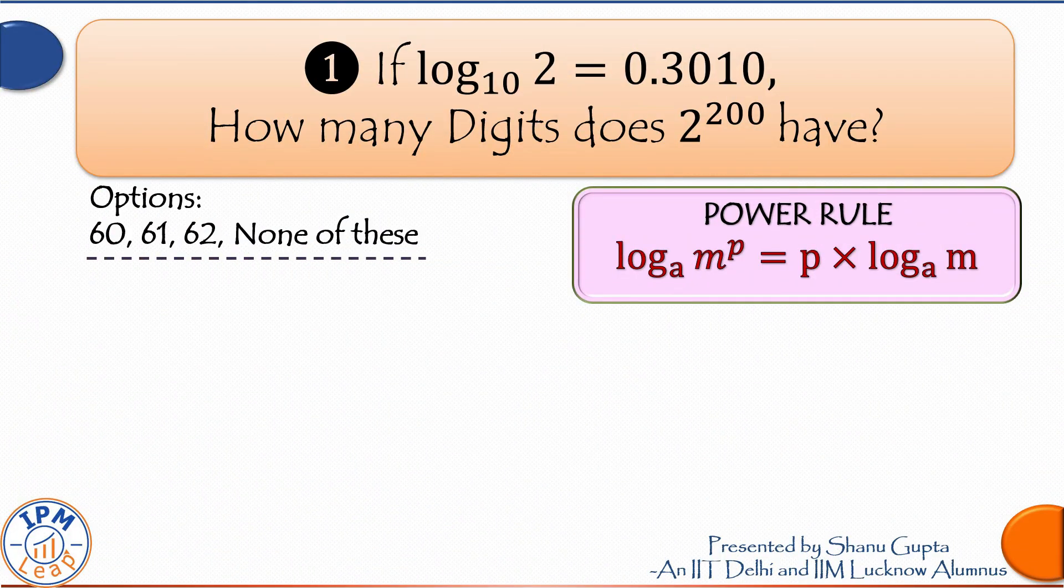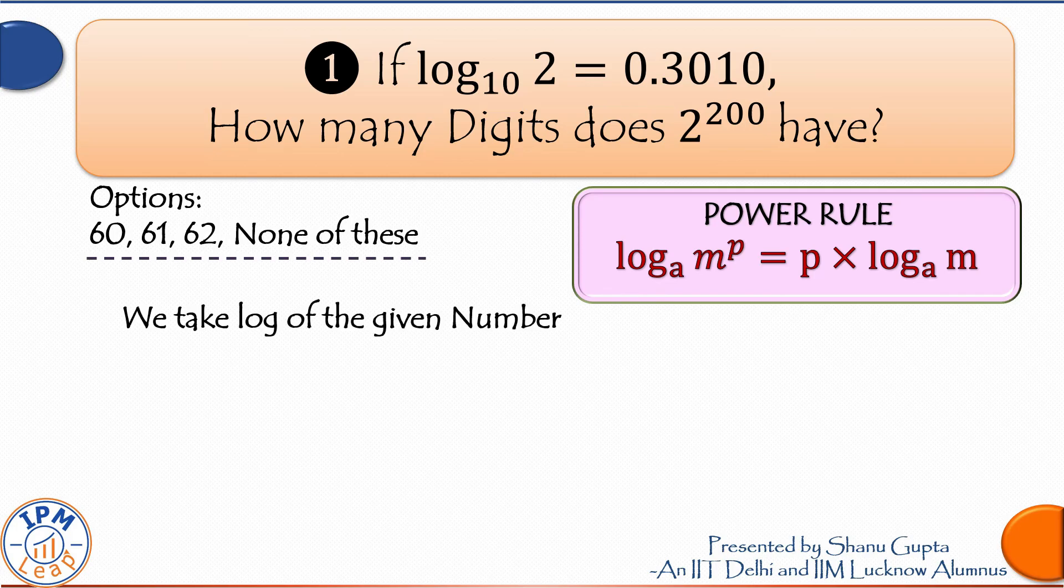So our first question is, how many digits does 2 raised to the power of 200 have? And they have given us the value of log 2 as input. Simply, we take the log of the given number and using this power rule of logarithms, we can take the power out.